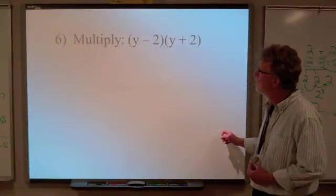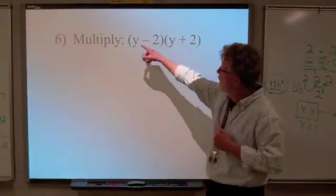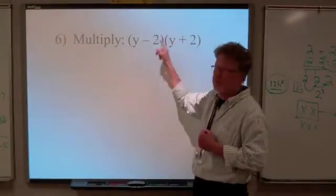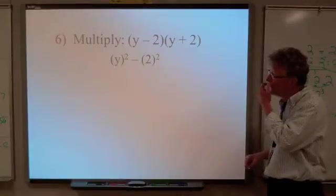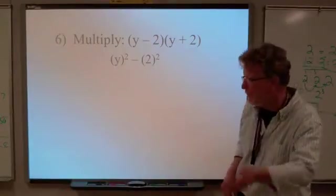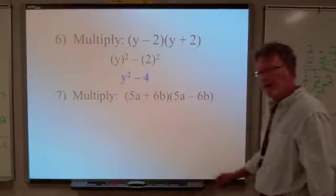And now let's try this one. Again, we've got (y - 2)(y + 2). y and y, 2 and 2. The only difference is the sign. So we're going to have y² - 2². 2 squared is 4. Very good.